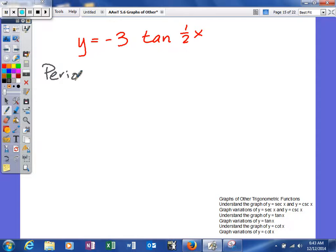We're going to find our period. Remember with tangent and cotangent, it's not 2π over b, it's π over b. B in this problem is one-half. Instead of dividing, I'm going to multiply by the reciprocal, 2π.